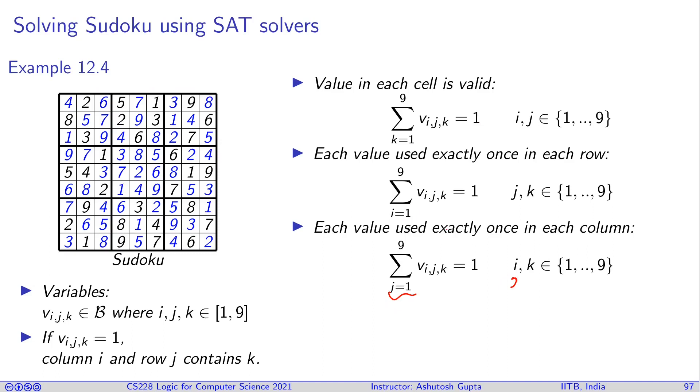Now what is left to be encoded? The box constraints. The box constraints are similar to these constraints. Instead of talking about the whole row or whole column, they're talking about these 9 boxes and there are 9 such constraints. So it's slightly involved, but you can take a look again and carefully check these indices.